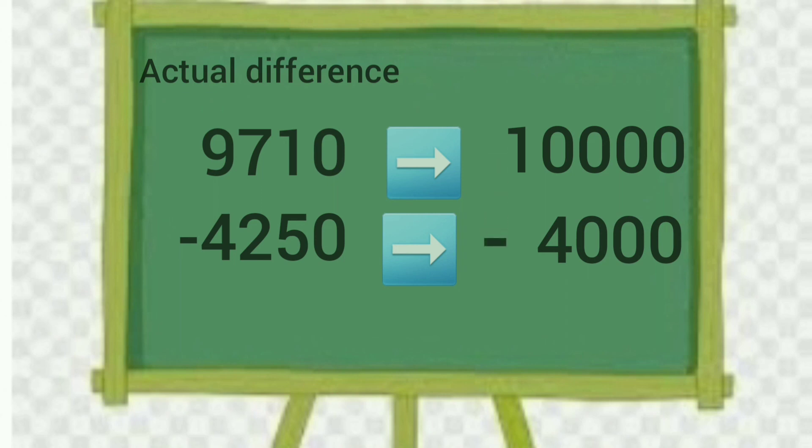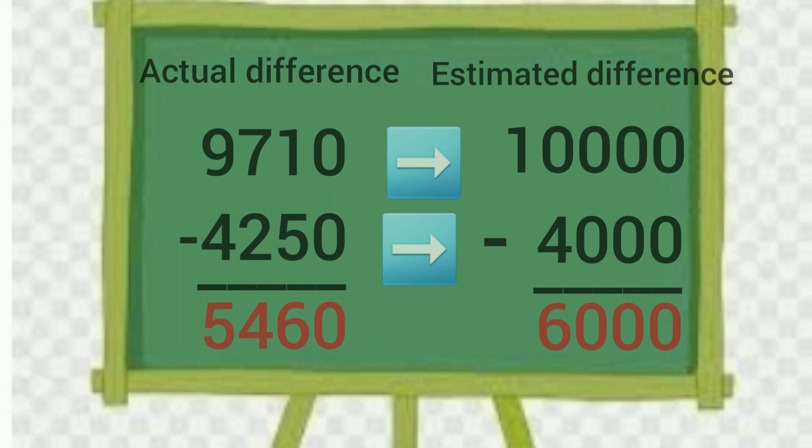Now let us find the difference of 10,000 and 4,000, and it will be equal to 6,000. Now let us find the actual difference, 9,710 minus 4,250, and the difference will be 5,460.